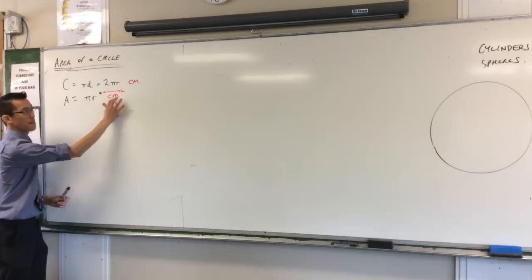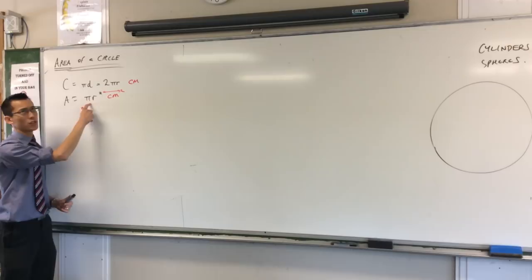The number of dimensions here, centimeters by centimeters, matches the number of units of, not units, the number of lengths that you have here. Radius and then radius again, as opposed to just the one.